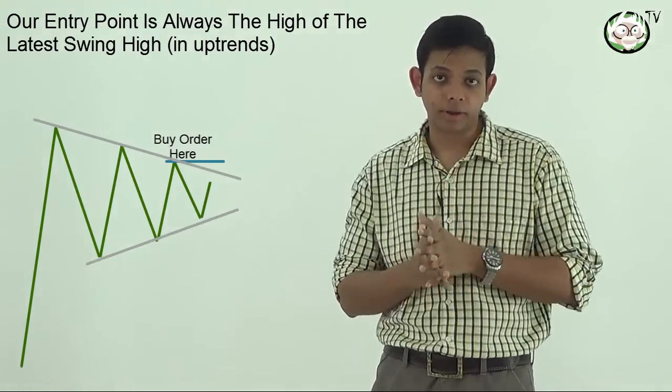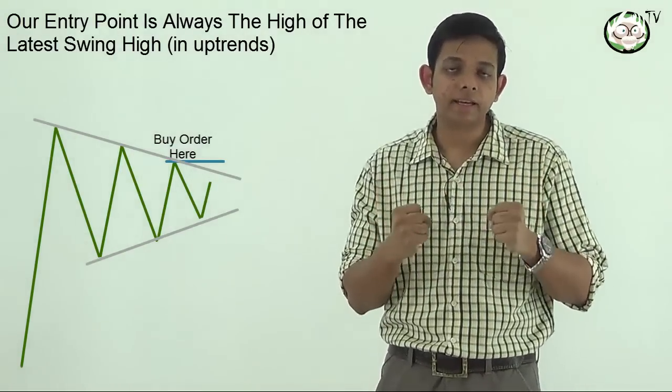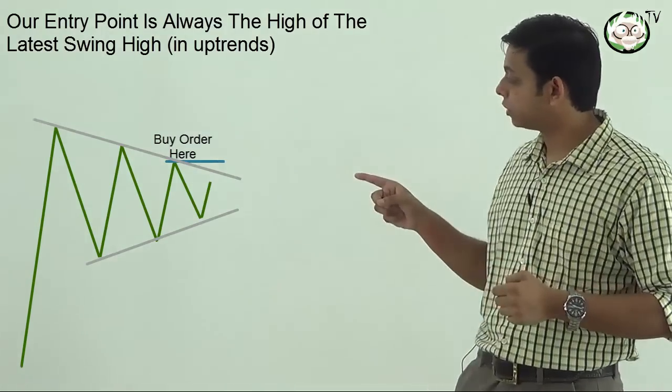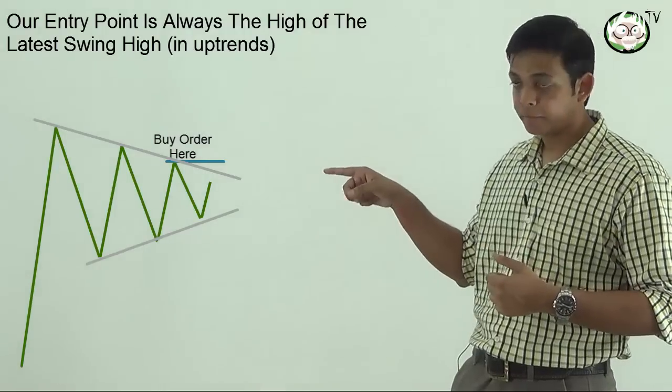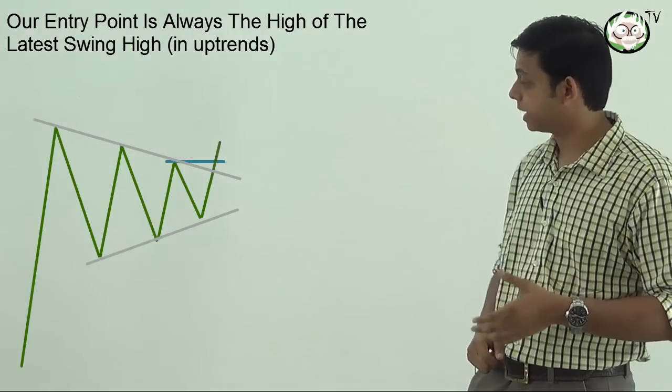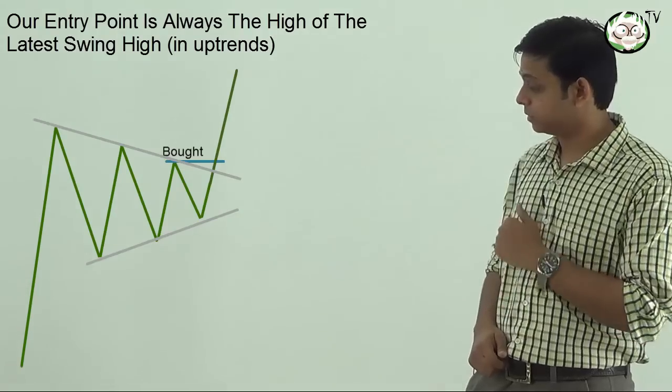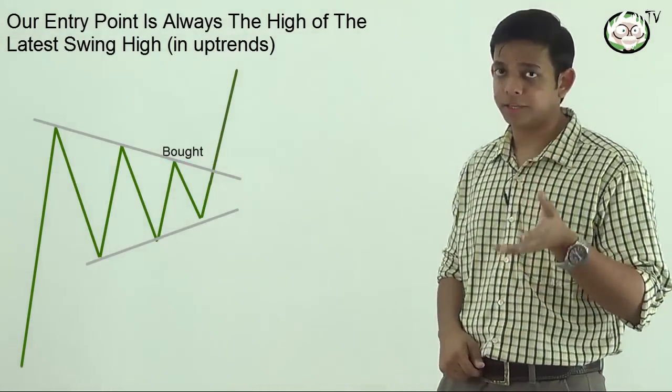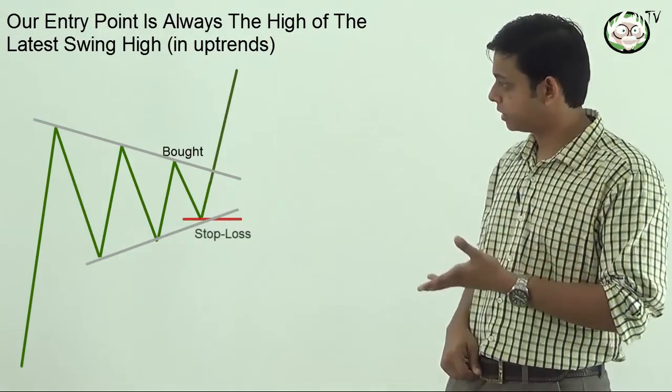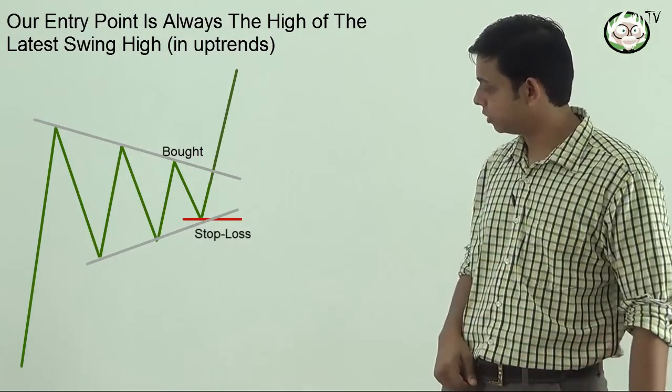Your stop loss to buy is going to be the swing high. So when the markets move up and break out, that is going to be the entry point. Your stop loss is going to be the latest swing low, somewhere there. That is your latest swing low and that's about it.